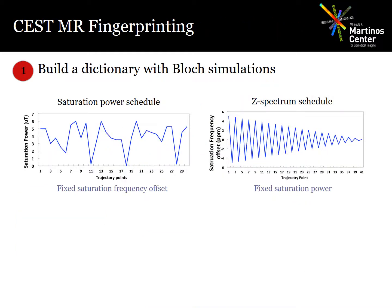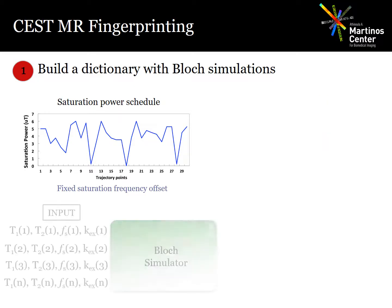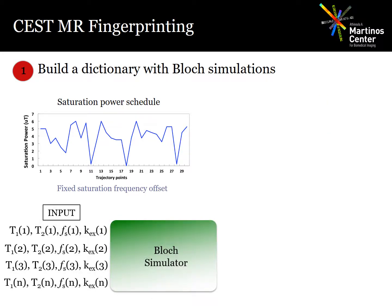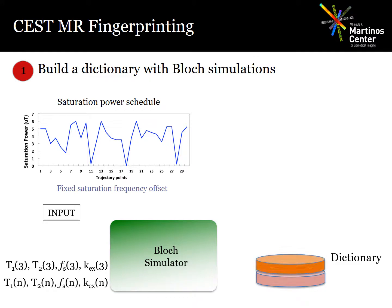To build the dictionary, we used an acquisition schedule that varied the saturation power randomly for 30 iterations, but we kept the saturation frequency offset fixed. For each set of tissue parameters, we used the Bloch-McConnell simulator to generate the corresponding signal trajectory. And this is how we built our dictionary.